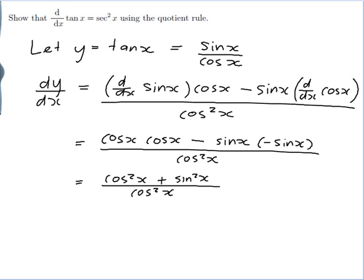And cos squared x plus sin squared x is 1. 1 over cos squared x.